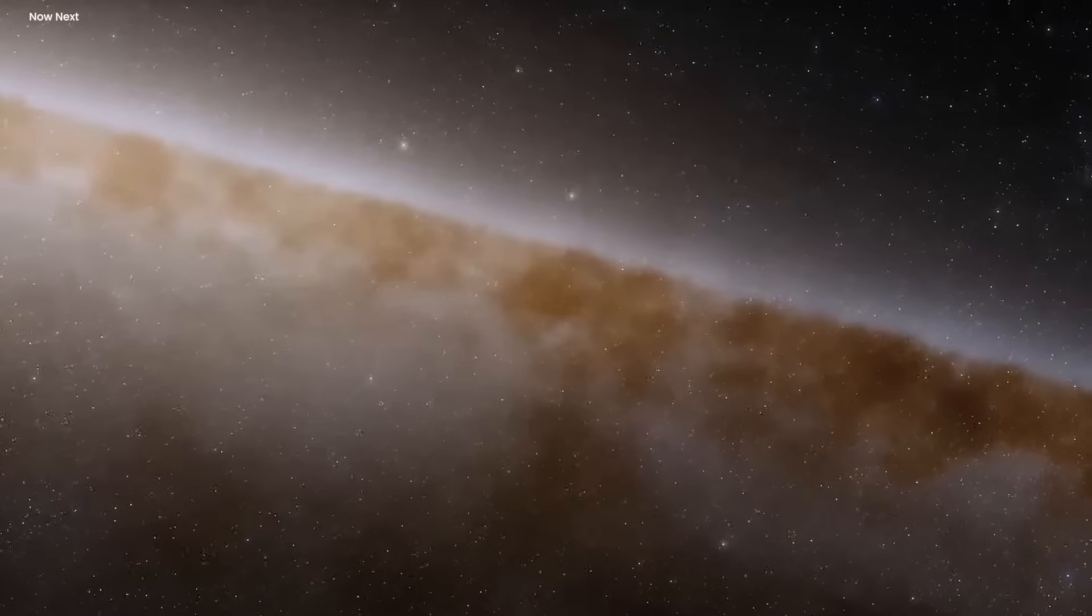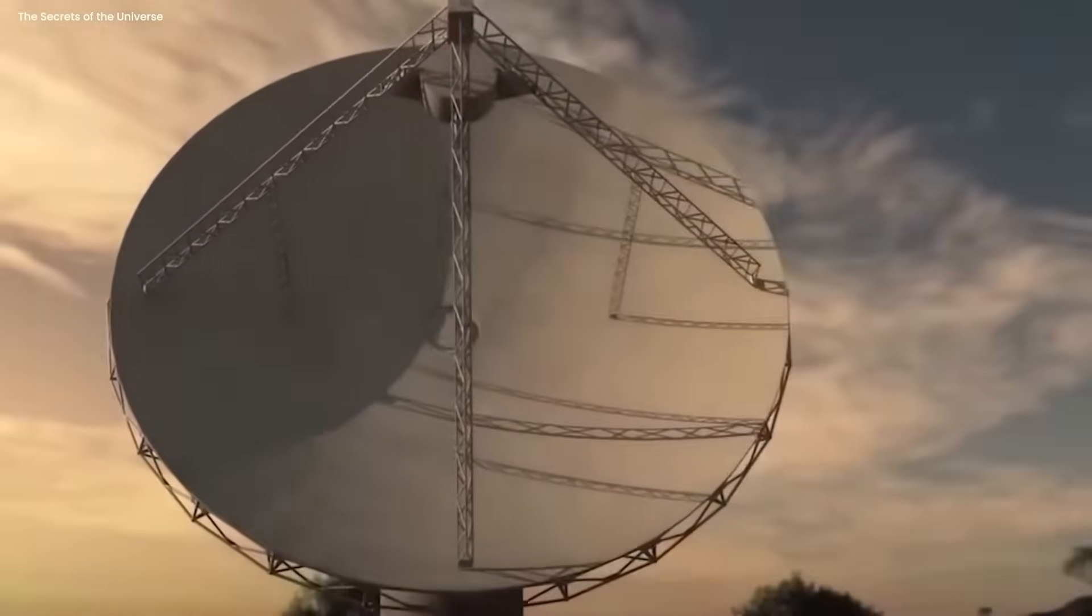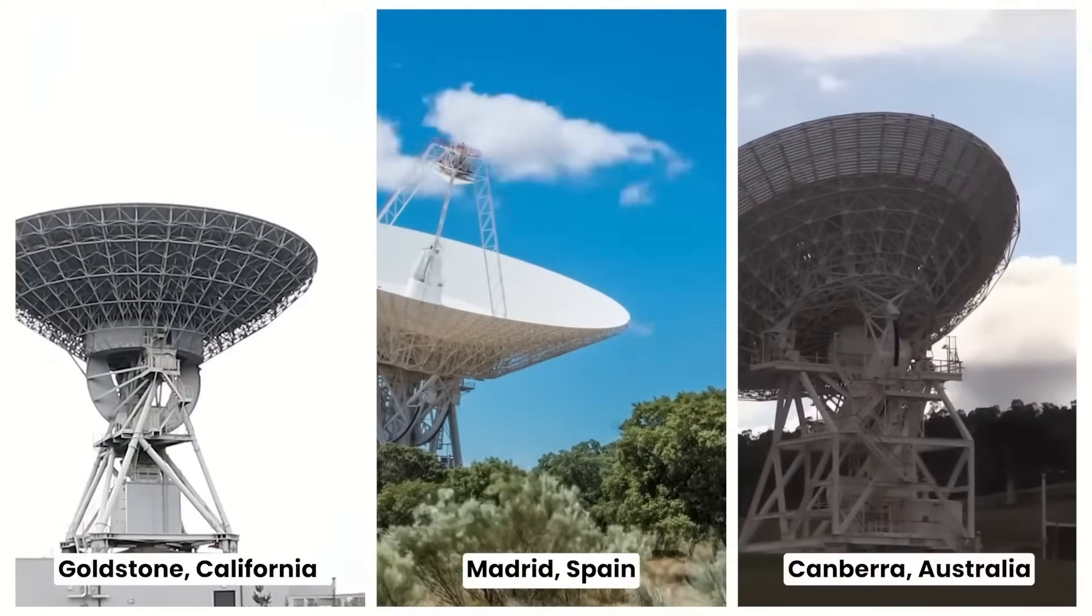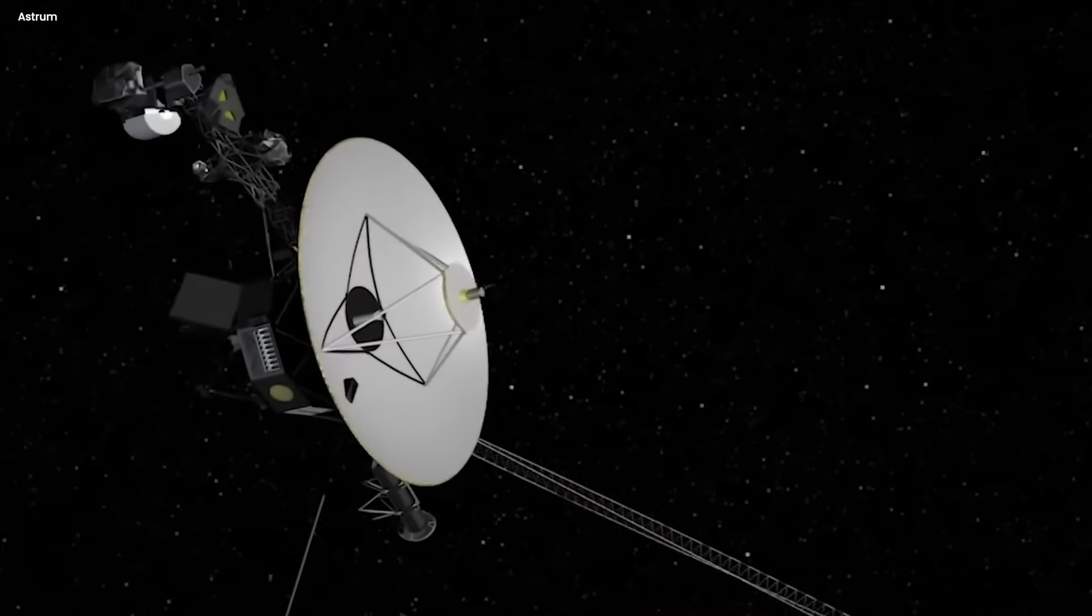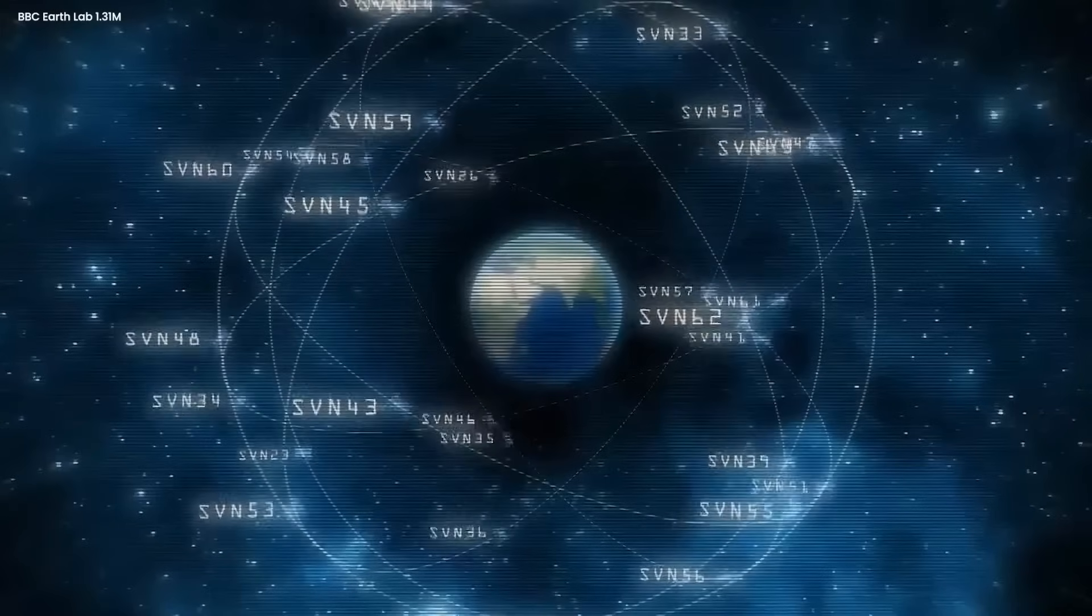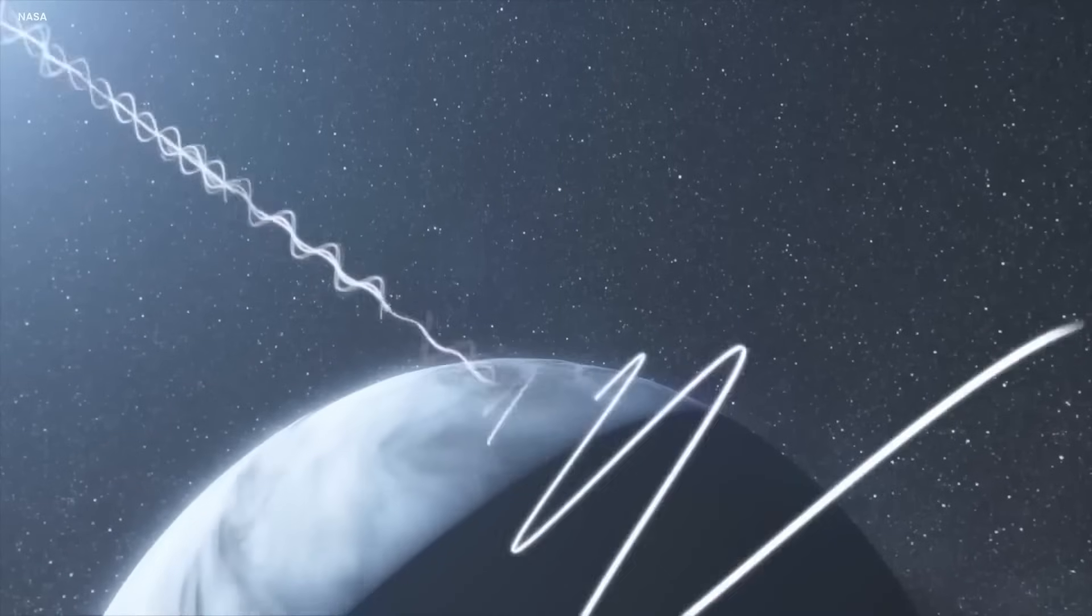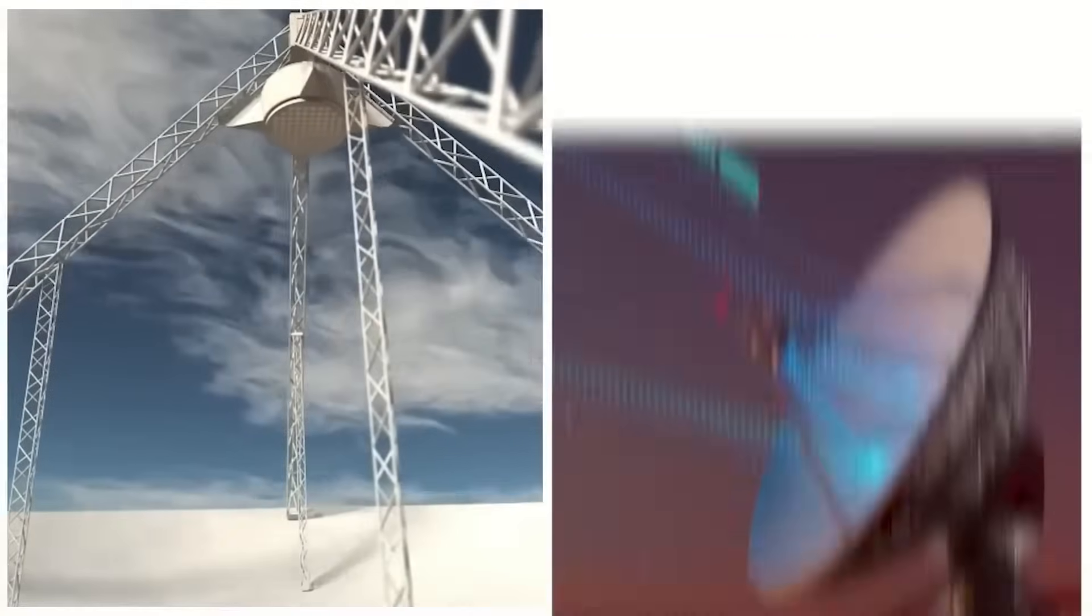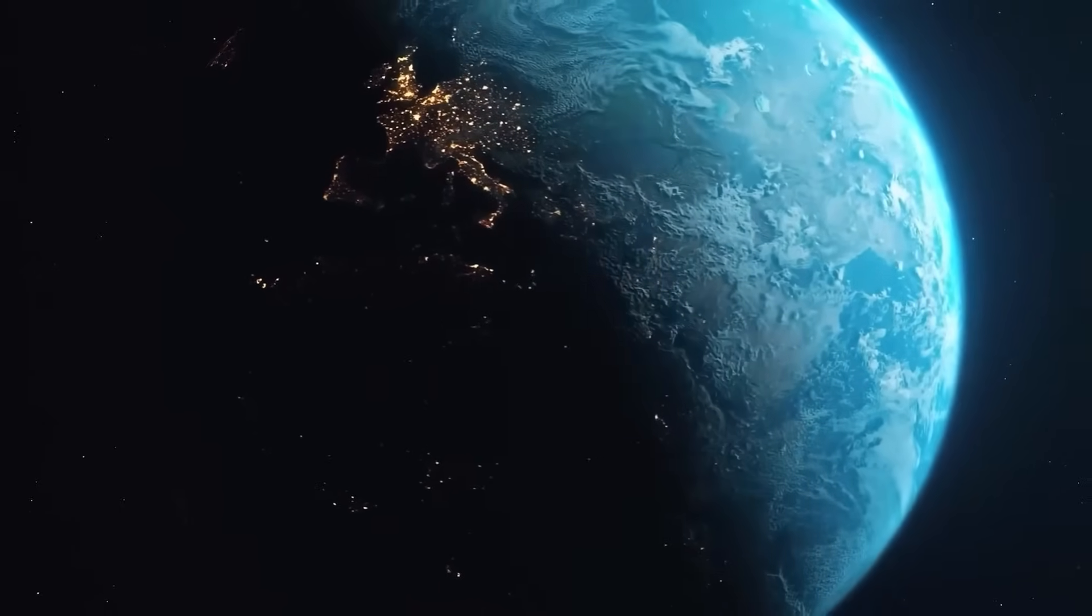The DSN consists of three deep space communication facilities situated approximately 120 degrees apart. These locations include Goldstone in California's Mojave Desert, Madrid in Spain, and Canberra in Australia. This strategic positioning ensures continuous coverage and observation of spacecraft as the Earth rotates. Operating on the principles of radio wave transmission, the DSN communicates with spacecraft using its colossal antennas, sending and receiving radio waves to establish a vital link between Earth and the distant probes.